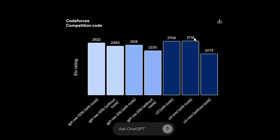You might be wondering why O4 mini is better than O3 as well — it is a slight improvement. The reason is these competition coding scenarios depend very heavily on math, and O4 mini is very good at math, so its performance is good in Codeforces competition as well.